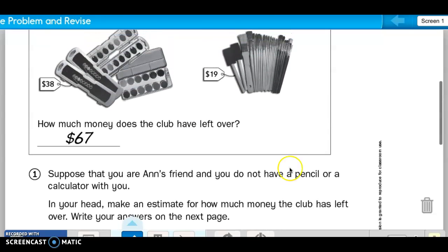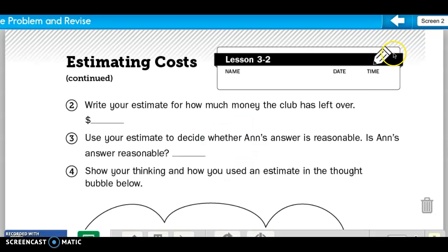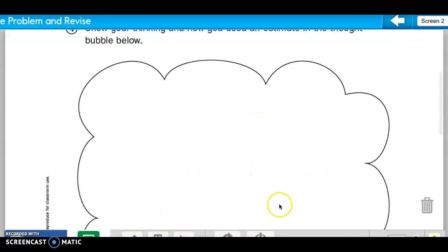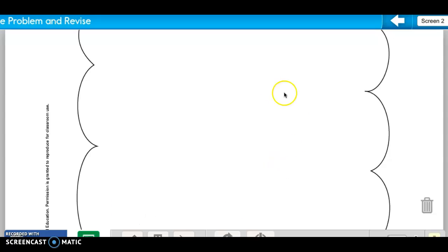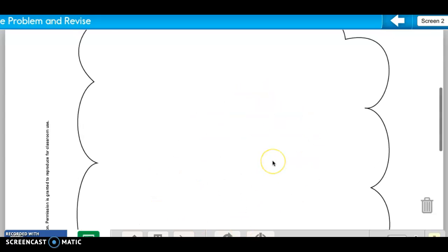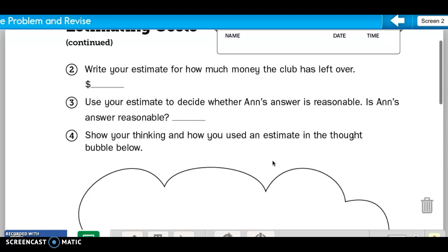So I am going to go up here to the next screen where, actually, this is where we should have done our work. So hopefully you did your work in the bubble when you did it. And write your estimate of how much the club has left over. Our estimate was $40. When we estimated, it was $40.